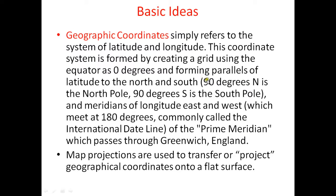Another important coordinate system is the geographic coordinate system, which we use for GIS and for the Earth. Geographic coordinate system simply refers to the system of latitude and longitude. Any point on the Earth can be measured using latitude and longitude. This system is formed by creating a grid using the equator at 0 degrees and forming parallels of latitude to the north and south up to 90 degrees.